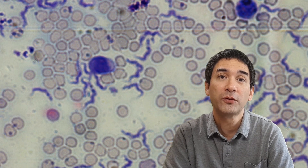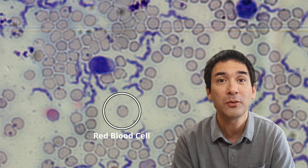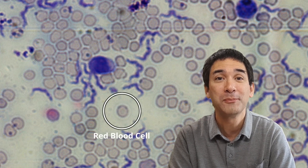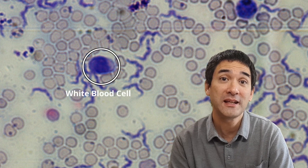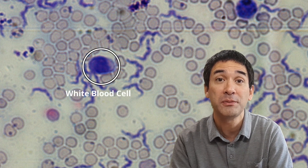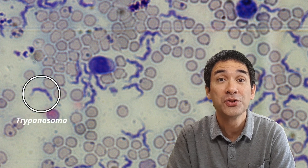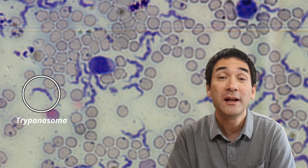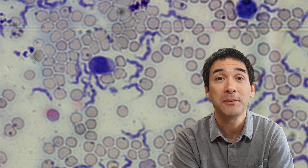You can see the red blood cells on here — they can be quite easily identified. There are many of them in a small drop of blood. There are also white blood cells; they stain purple because of the chemical used to stain them. The trypanosomas, the parasite, are also stained purple, and you can recognize them quite well by their shape.